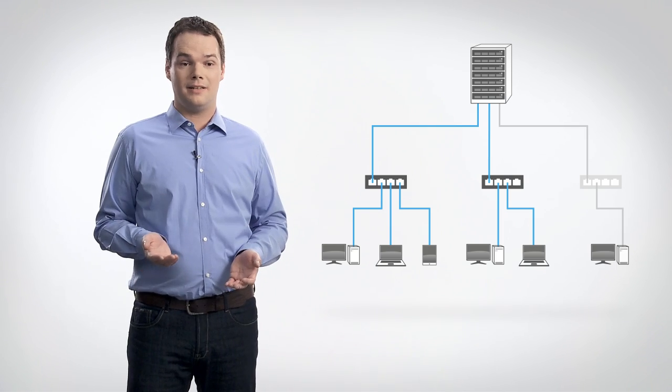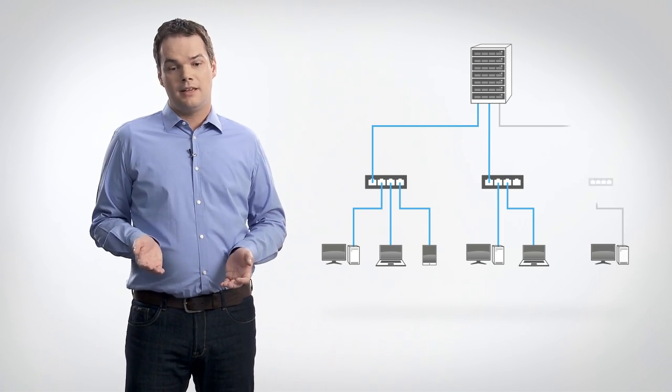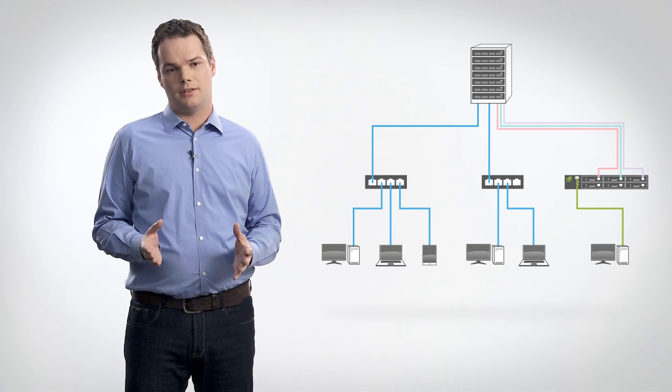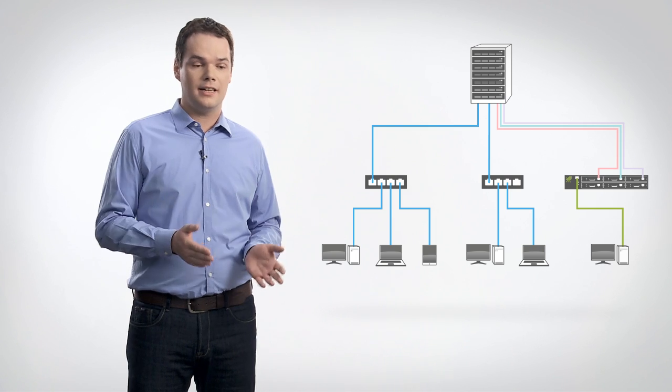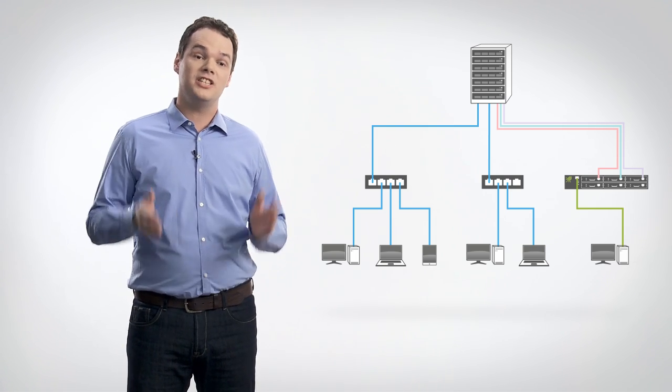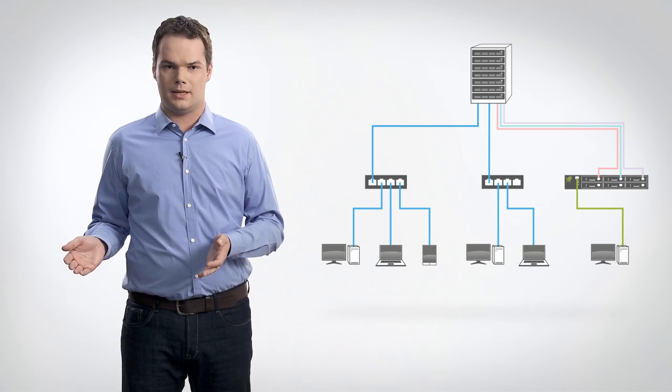Now, Viprinet customers take a different approach. They combine their already existing connections with several WAN technologies, like for example DSL, 3G or 4G, to create one high-speed link, which is independent from a specific internet service provider.